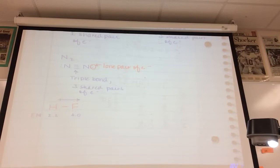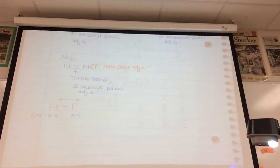Fluorine is the most electronegative element and is often involved in ionic bonds, especially when it bonds with a metal. There is a periodic trend for electronegativity: as you go across the periodic table it increases, and as you go down a group it decreases — something we learned back in chapter 4.